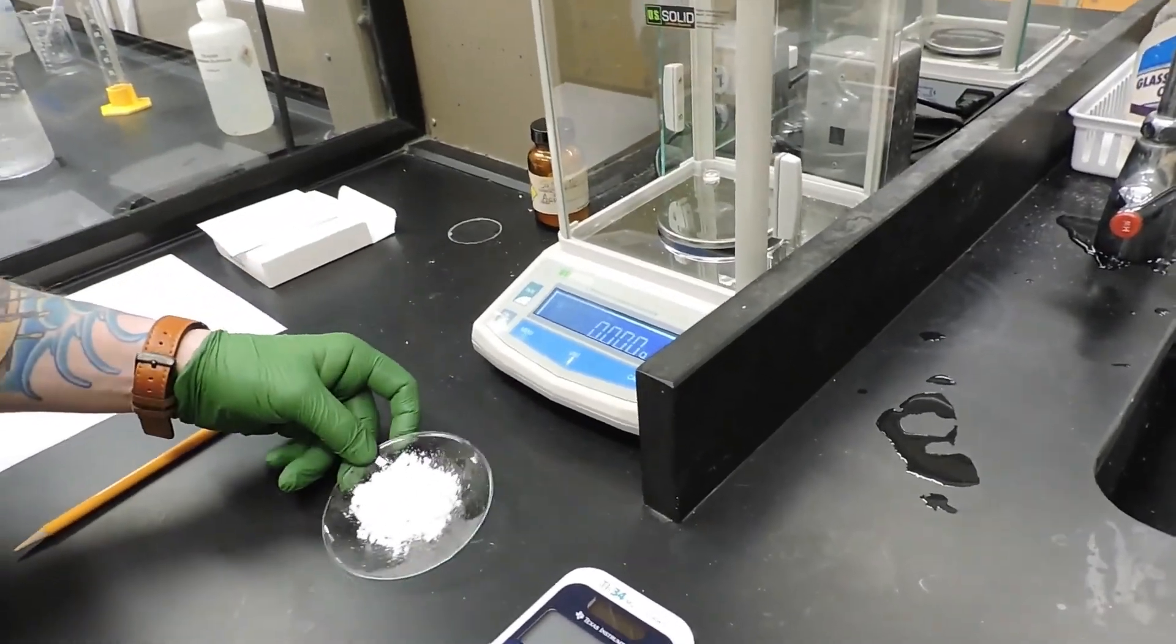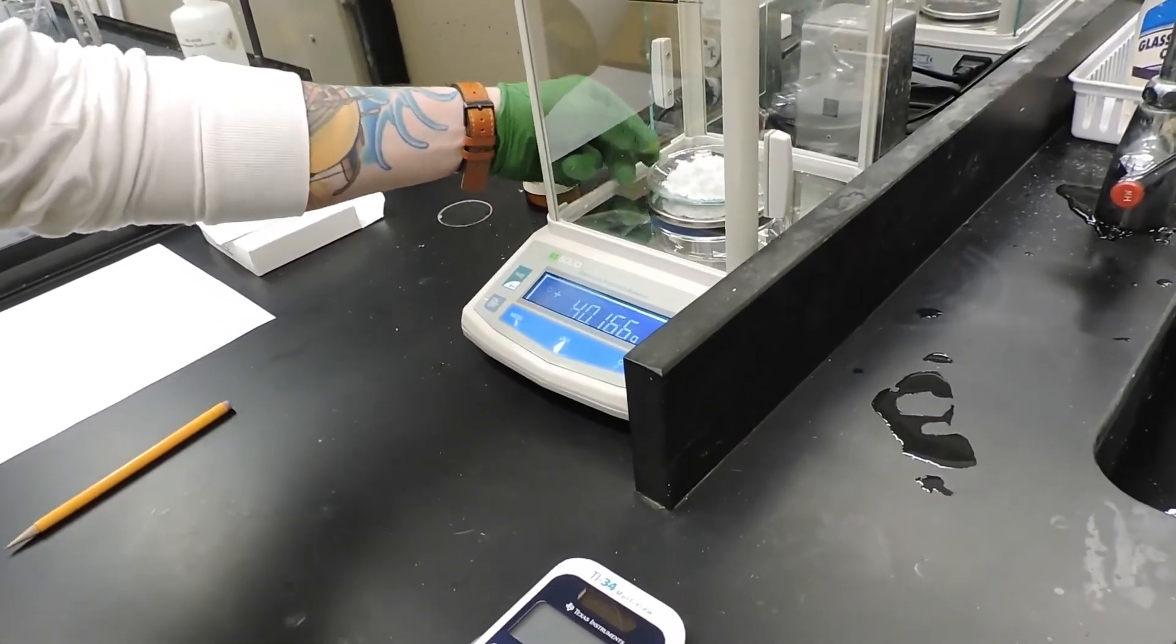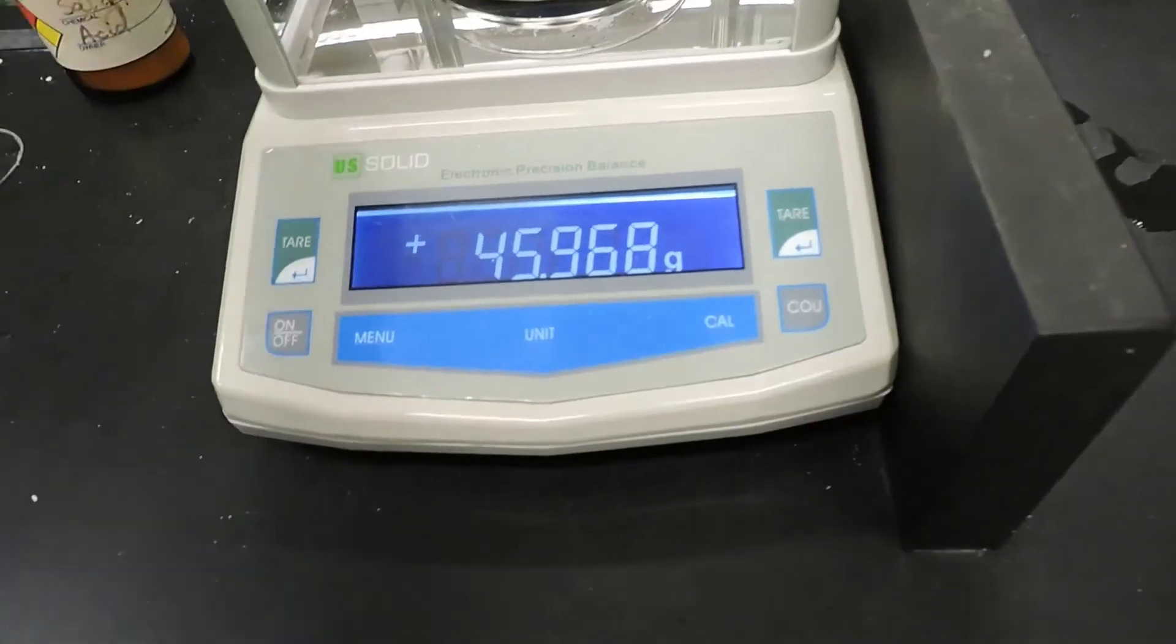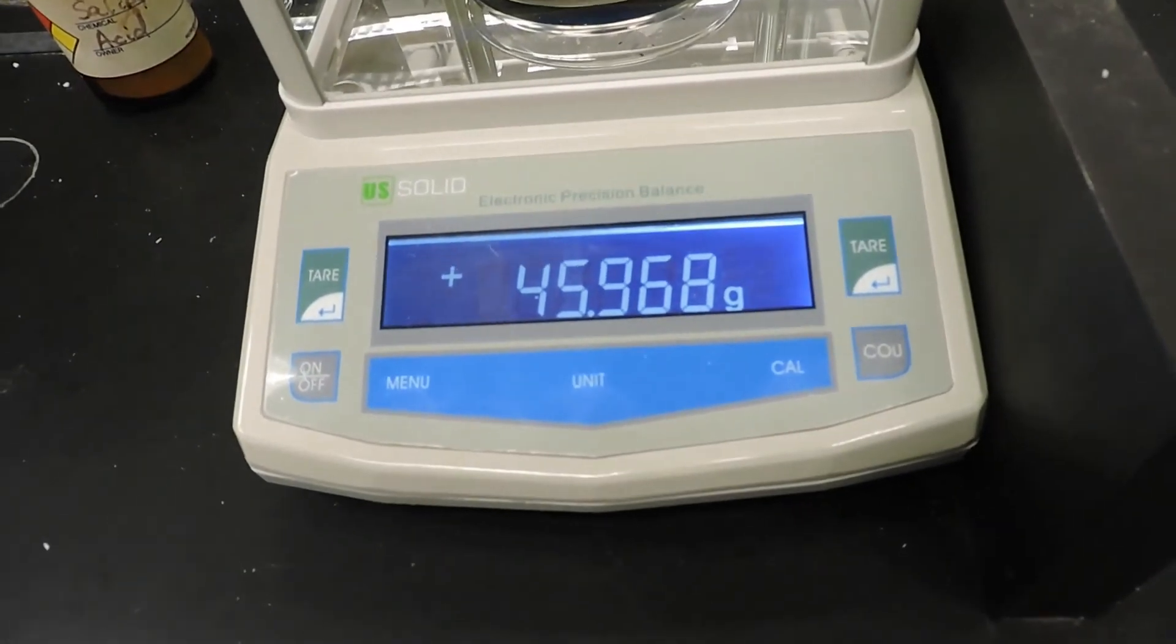Now we're going to weigh the alum that we collected with the watch glass. That mass is 45.968 grams.